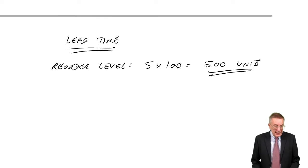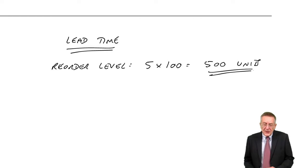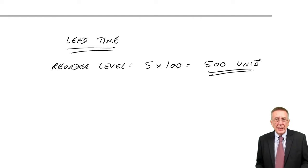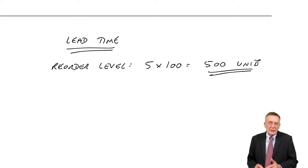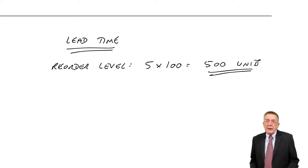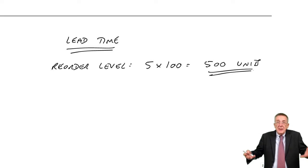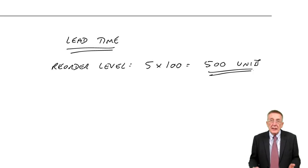Except in practice, you're never going to be certain of how long it will take them. We might tell them about five weeks, but maybe it might take slightly longer, slightly shorter. Or even if we were sure it was going to take five weeks, the customer's demand, it might be on average 100 units a week, but sometimes the demand may be a bit higher, sometimes a bit lower.